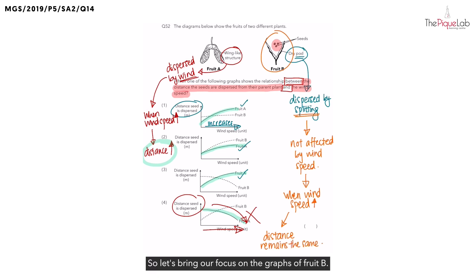So let's bring our focus on the graphs of fruit B. Let's look at option 3 first. We see that the distance the seed is dispersed is decreasing. So this is wrong. Remember, we are looking for the distance to remain the same.